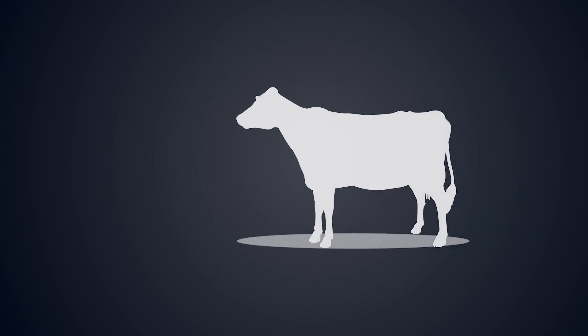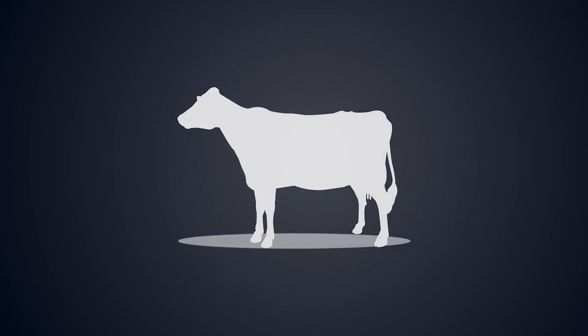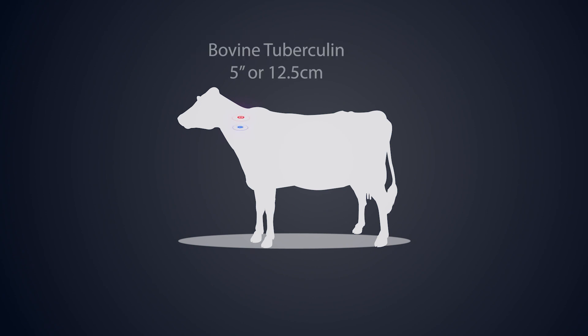The correct location of the injection site is critical to the accuracy and consistency of the test. The prescribed injection sites are situated at the border of the anterior and middle thirds of either side of the neck. The upper site for avian tuberculin is about 4 inches or 10 centimeters below the crest of the neck. The lower site for bovine tuberculin should be about 5 inches or 12.5 centimeters from the upper site, in the same plane along a line drawn parallel with the line of the shoulder.